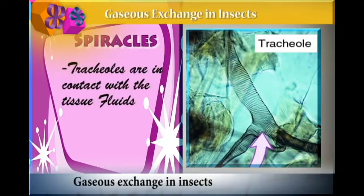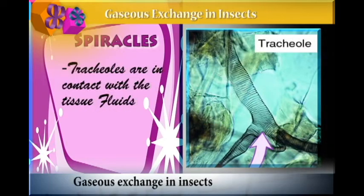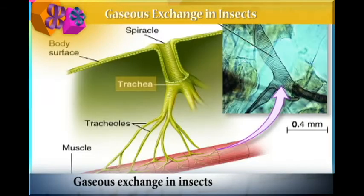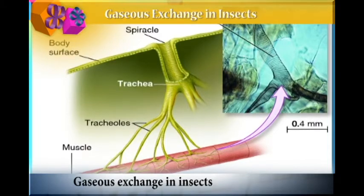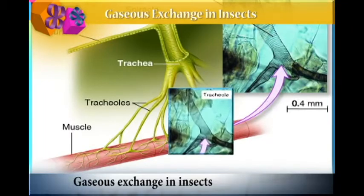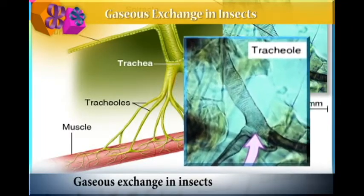The tracheoles come into contact with the tissue fluids. Air enters via the spiracle valves and then passes into the tracheae. From the tracheae it enters into the tracheoles, which have subdivisions. Air from the tracheae moves through the tracheoles up to the tissue fluids.